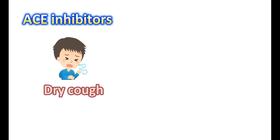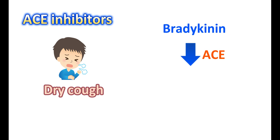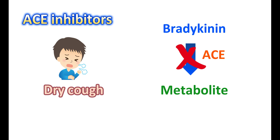ACE inhibitors can produce dry cough, commonly observed in many people. This may occur even with the first dose or develop after a few months of therapy. Dry cough is caused by accumulation of bradykinin in the body, because the ACE enzyme is normally responsible for metabolism of bradykinin. When ACE inhibitors are used, bradykinin metabolism is inhibited, leading to its accumulation. This dry cough may resolve after one month of stopping therapy, but sometimes it lasts up to three months. It may be more troublesome at night and interfere with sleep. If dry cough is observed, ACE inhibitors may be discontinued.